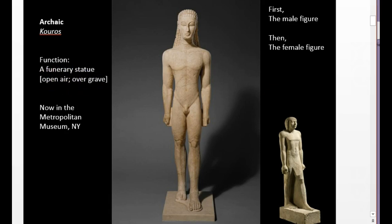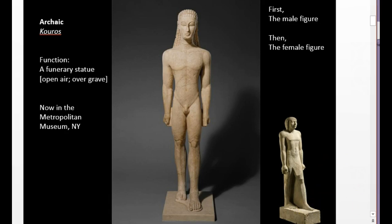They tend to commemorate very specific people with inscriptions. The inscription is lost on this one, so we just call it a Kouros. I want you to notice that it is very much like an Egyptian statue — I want you to stop the video and do a compare and contrast. They are very much alike in many ways, but differ in function. This one is open-air; the Egyptian would probably be inside a tomb.